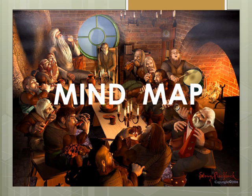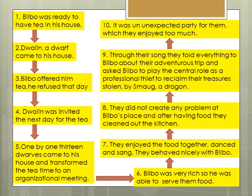Now I would like to show you the mind map so the chapter would be more clear to you. The story starts with Bilbo — he was ready to have his tea at home. At that time the door knocked and Dwalin, a dwarf, came to his house. Bilbo opened the door and asked him to come inside, then offered him tea, but Dwalin refused. Dwalin was then invited the next day for tea again. In this way, thirteen dwarves came to his house one by one, and they transformed the tea time into an organizational meeting. Bilbo was very rich so he was able to serve them food.